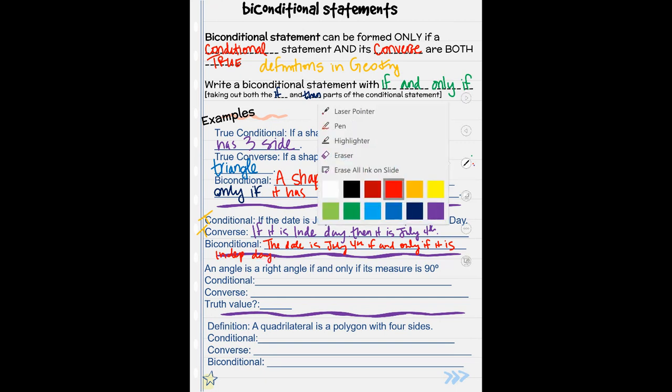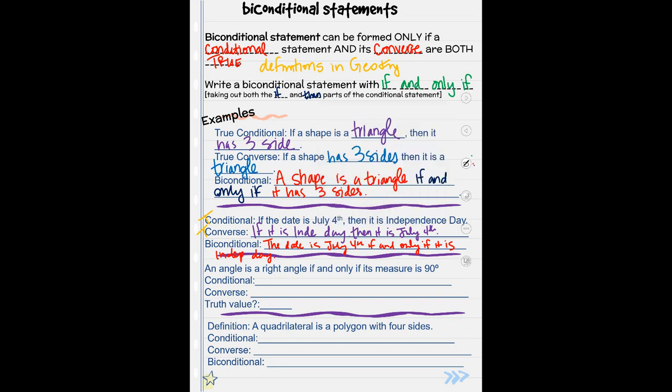An angle is a right angle if and only if its measure is 90 degrees. So I am given this time the biconditional statement. Now let's write the conditional statement and the converse statement. This part that comes before the if and only if is our hypothesis. The one that comes after is our conclusion.